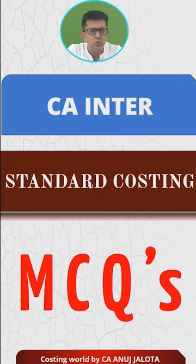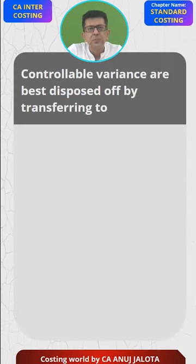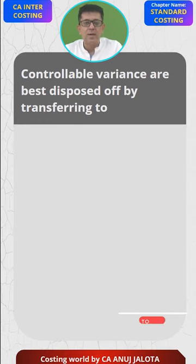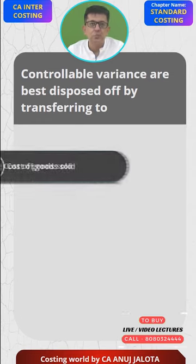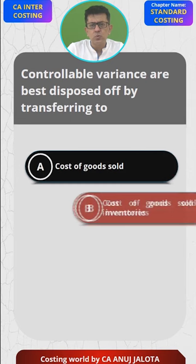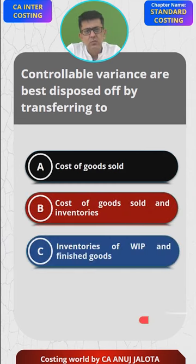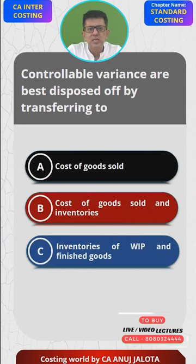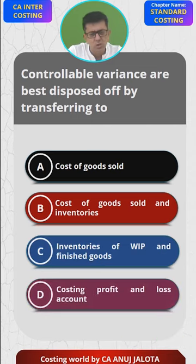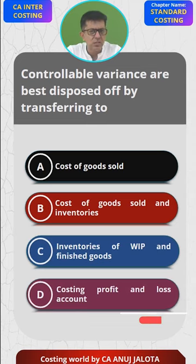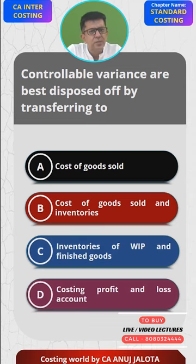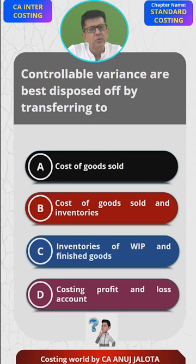So let's see what we have in store today. Controllable variances are best disposed of by: A — transferring to cost of goods sold, B — cost of goods sold and inventories, C — inventories of WIP and finished goods, and D — costing profit and loss account. Think of the correct answer — this we must have done in theory somewhere. Think of the correct answer and comment below.